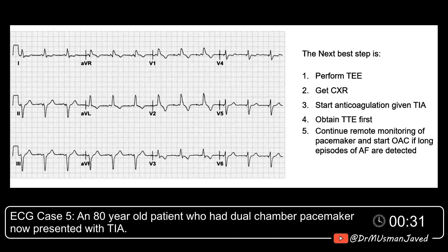The device check shows normal parameters and three mode switch episodes lasting less than five minutes. What's the next best step? Would you do a TEE to look for cardioembolic sources, get a chest x-ray, start anticoagulation given the TIA clinical picture, order a transthoracic echo, or continue remote monitoring of the pacemaker and start anticoagulation if longer episodes of AF occur?